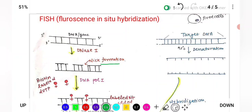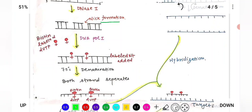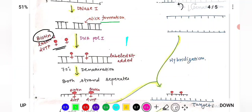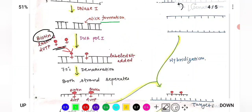After NIC formation, the next step is the insertion of biotin-labeled nucleotides. Our nucleotides are labeled with biotin — a reporter molecule — and added at the NIC site. After adding biotin-labeled nucleotides, denaturation is performed.